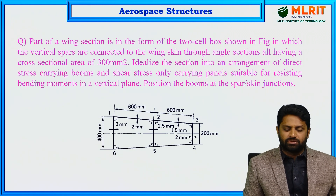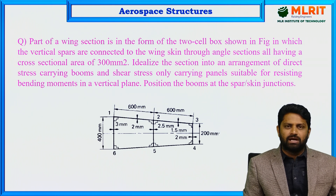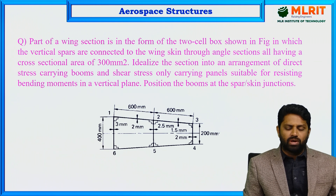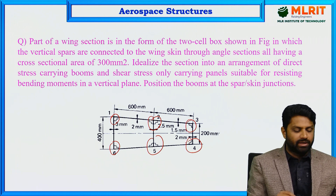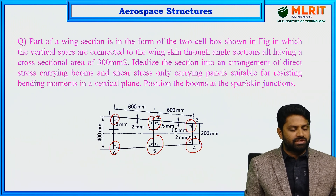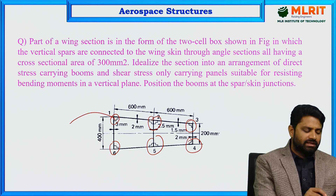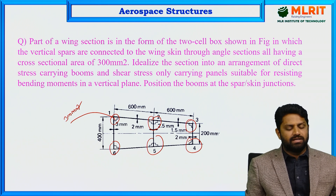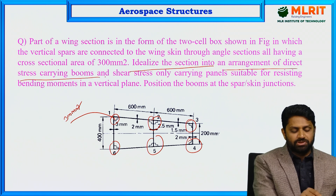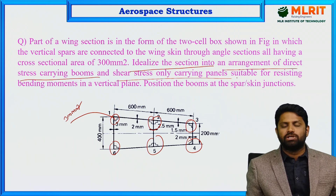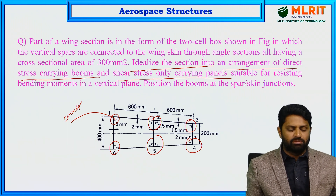Consider this question: a part of a wing section is in the form of a two-cell box as shown in the figure, in which the vertical spars are connected to the wing skin through angle sections. These angle sections all have a cross-sectional area of 300 mm². The question asks us to idealize the section into an arrangement of direct stress carrying booms and shear stress only carrying panels, suitable for resisting bending moments in a vertical plane.